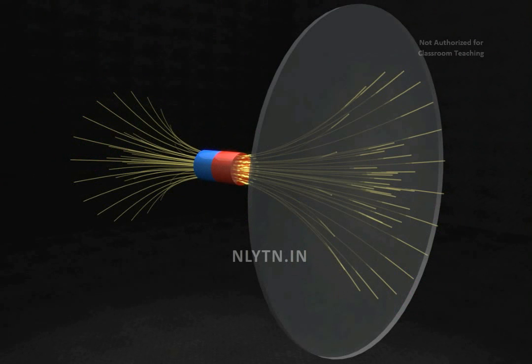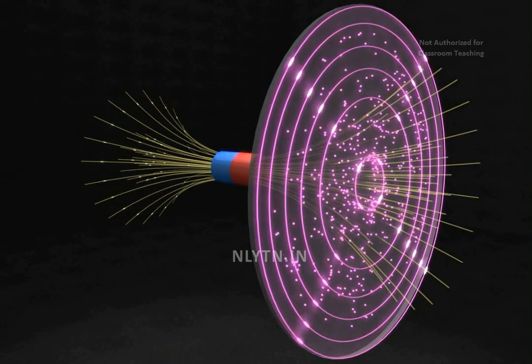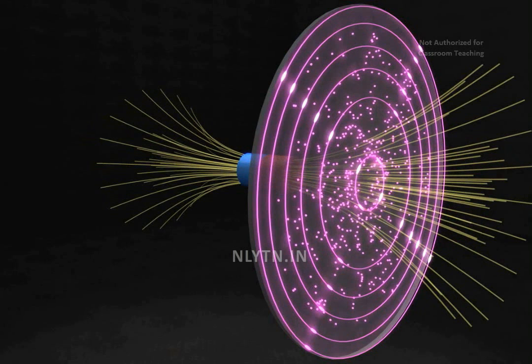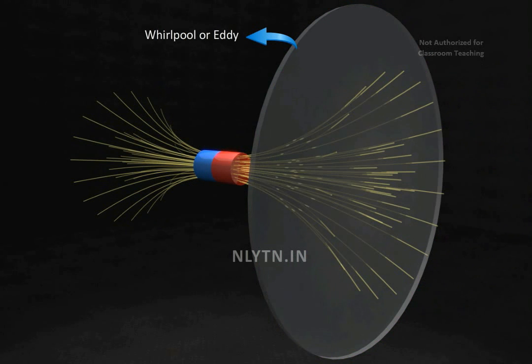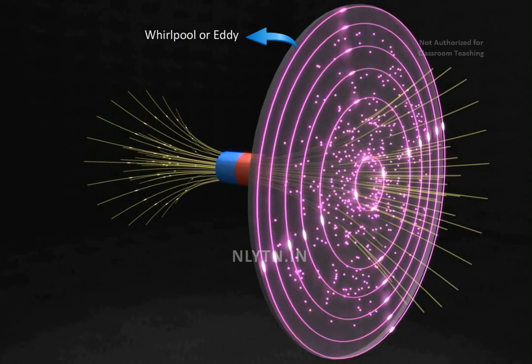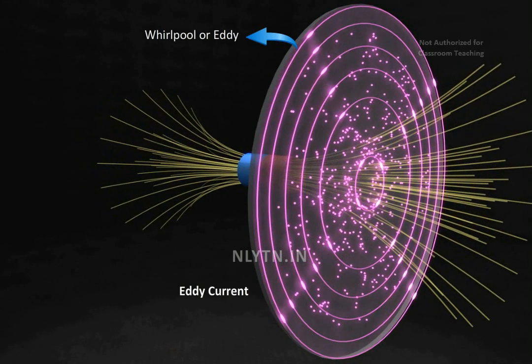Note that if we place a disk instead of the coil, then though electrons are free to move anywhere in the disk, they still follow somewhat concentric circular paths as if they are trapped inside a whirlpool or an eddy. Such a current is called an eddy current.